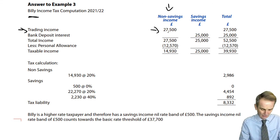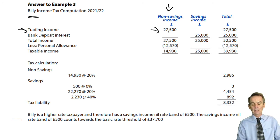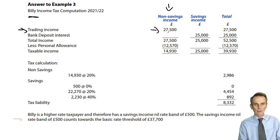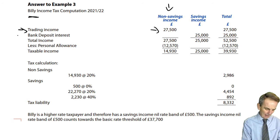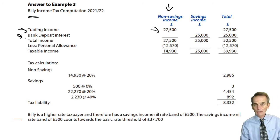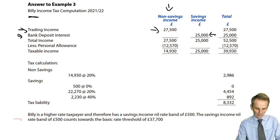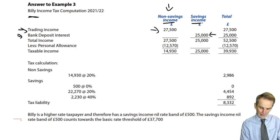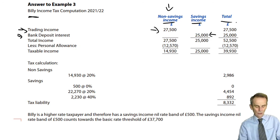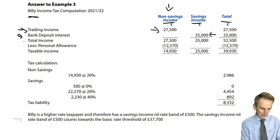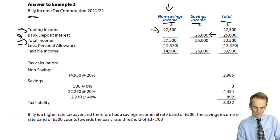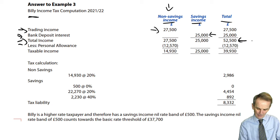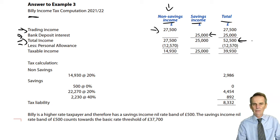What's changed, of course, is that we've significantly increased the amount of bank deposit interest. That bank deposit interest - our savings income - has gone up to £25,000. Running our two analysis and total columns as usual, we get our total income figures: the sum total of non-savings and savings combined at £52,500.